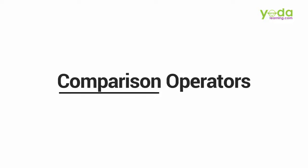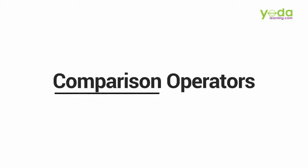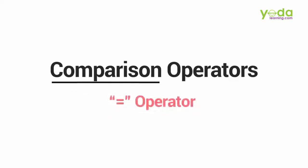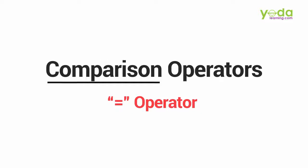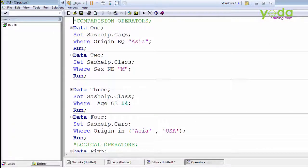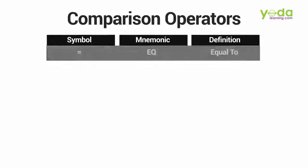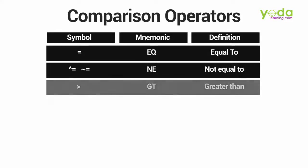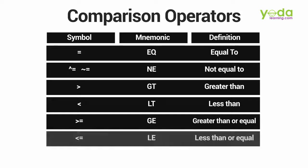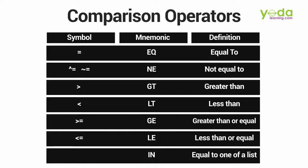Here we have these variables, and in previous videos you saw we used the equals-to symbol. This time I am using EQ. Instead of the symbol you can use EQ, NE, GT, or LT. NE is not-equals-to, GT is greater-than, and LT is less-than.